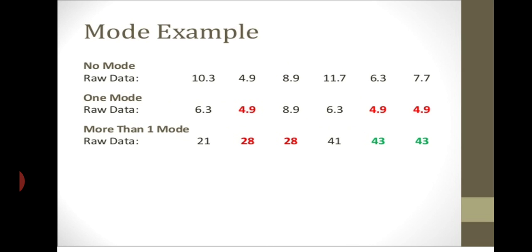For example, in the raw data 10.3, 4.9, 8.9, 11.7, 6.3, 7.7 — there is no mode. In another data set, 6.3, 4.9, 4.9, 4.9 — one value is repeated, so that is known as a one mode (unimodal).